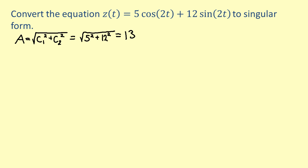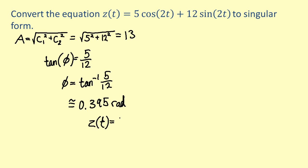Next, solve for phi. By our previous formula, we know the tangent of phi equals 5 twelfths. Therefore, phi equals inverse tangent of 5 twelfths, which is approximately 0.395 radians. Finally, we can rewrite our original solution as z of t equals 13 sine of 2t plus 0.395.